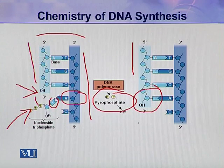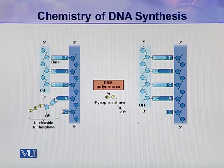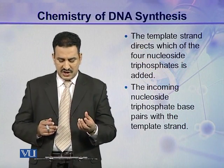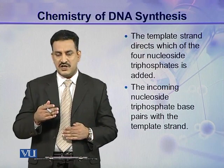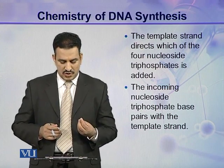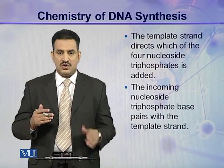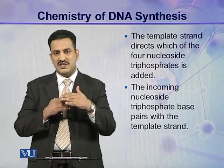In the next step, another nucleoside triphosphate will come, and this hydroxyl will again attack the alpha phosphate — the same reaction will be repeated. In this way, the primer chain grows and new DNA is synthesized. The template strand directs which of the four nucleoside triphosphates is to be added; it is the template, not the primer, that decides which type of nucleotide will be added. The incoming nucleoside triphosphate base pairs with the template strand.